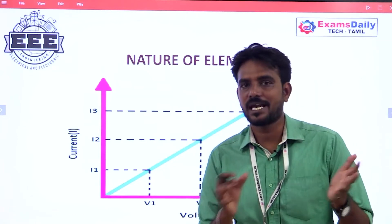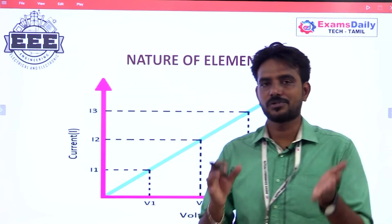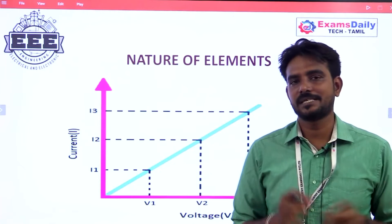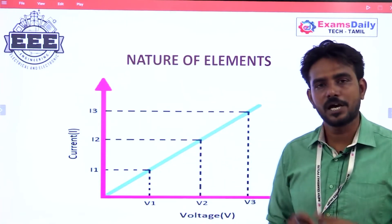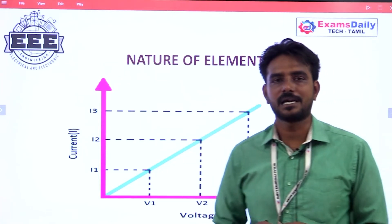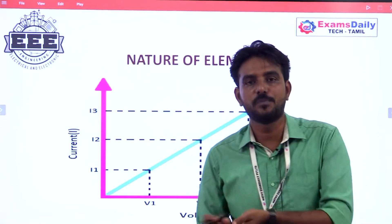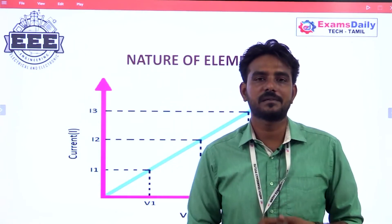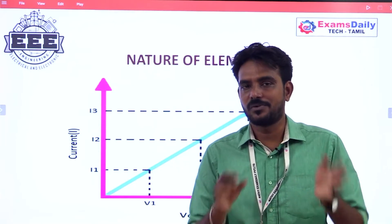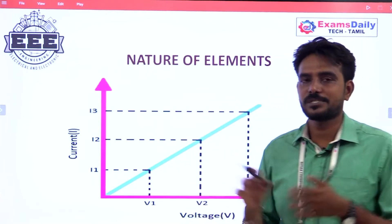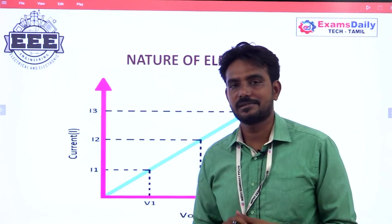What are elements? Elements are characteristics. Let's take a graph. This element is active or passive element, bilateral element or unilateral element. This is linear principle or non-linear principle. We are going to take a graph and talk about the details.